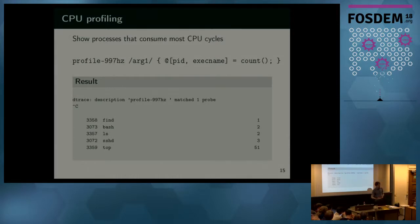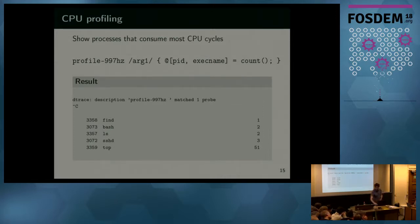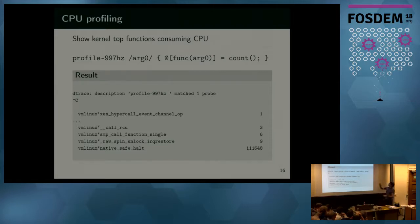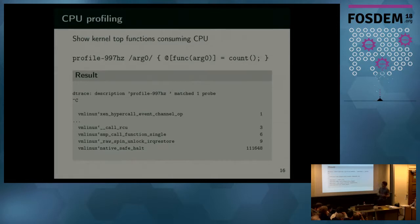What we did in this example is create a user space profiler with one line, monitoring every CPU and accounting for every program counter in user space. If we swap arg1 to arg0, we change it to a kernel profiler — arg0 being non-zero means we're in kernel context, and we aggregate using the 'func' subroutine, which takes a pointer and gives back a string name of a symbol. The output gives you symbol names and counts. The most often called function in the Linux kernel was native_safe_halt, because most virtual CPUs were idle.